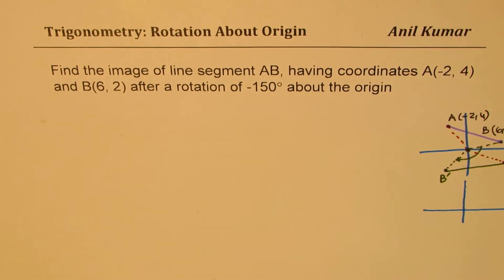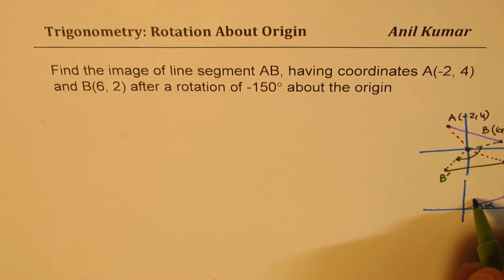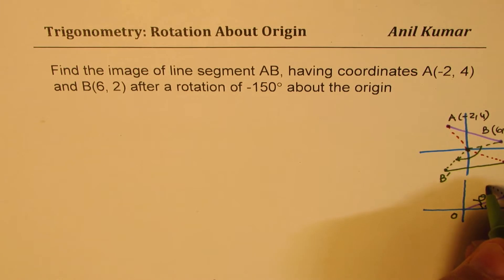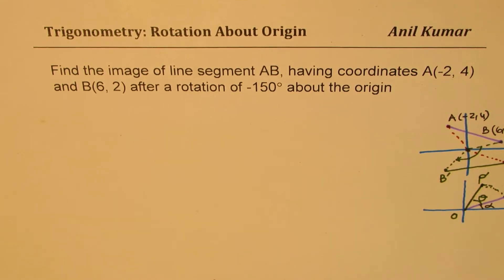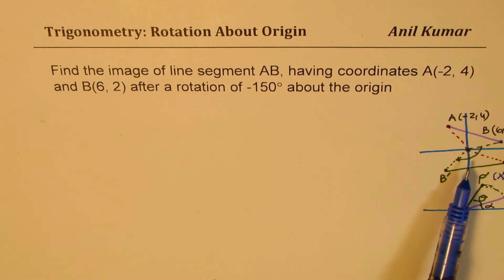Let us say we have a point P somewhere in quadrant 1 at an angle of alpha. That's our point P with coordinates X and Y. If we rotate this point by an angle theta about the origin O, then the final position could be a new point, P dash. How do we find the coordinates of P dash, which are going to be X dash and Y dash? The two problems are exactly the same, except we'll be working with two points with a given angle, and here we'll have a general solution.